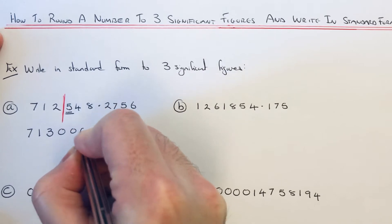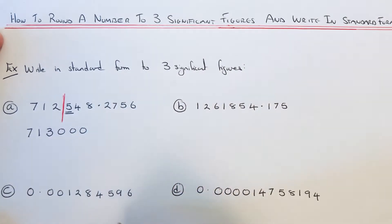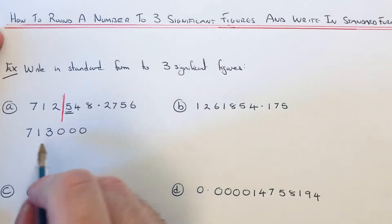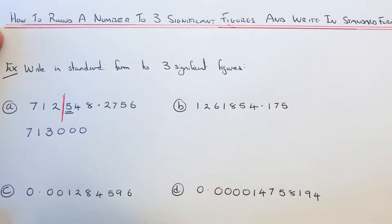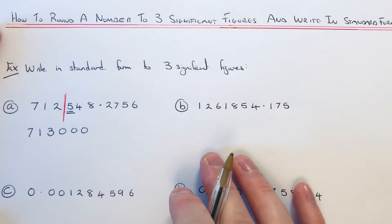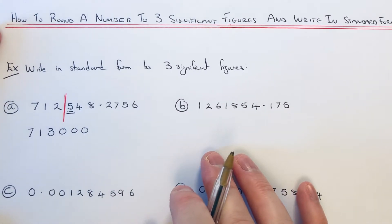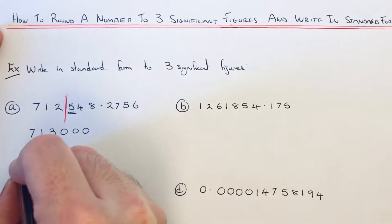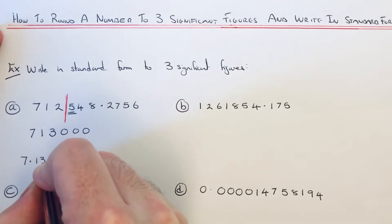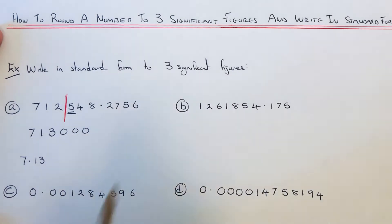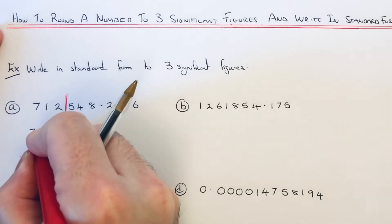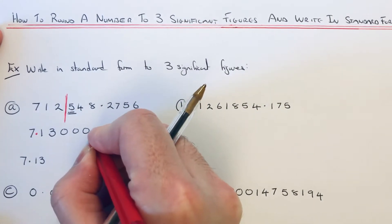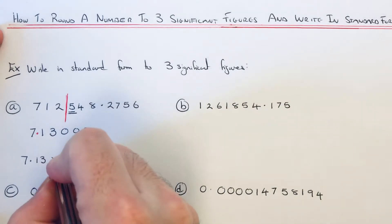We need to keep the size of the number by filling in zeros up to the decimal point. We can now write this number in standard form. To do this, make the first digit of our number between one and ten, so it's 7.13 — we put in the decimal point here. The decimal point was at the end.